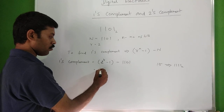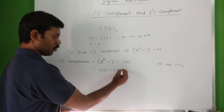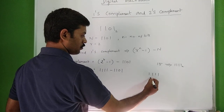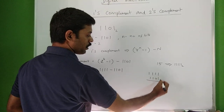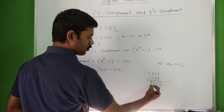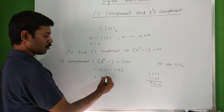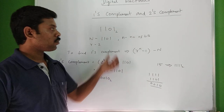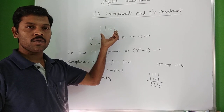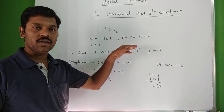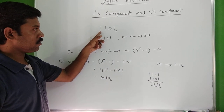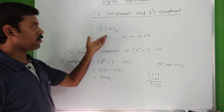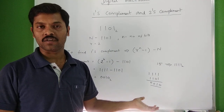15 in binary is 1 1 1 1. So: 1 1 1 1 minus 1 1 0 1. Working through the subtraction: 1 minus 1 = 0, 0 minus 0 = 0, 1 minus 1 = 0, 1 minus 1 = 0. Wait — the 1's complement result is 0 0 1 0. So 1 1 0 1's 1's complement is 0 0 1 0.